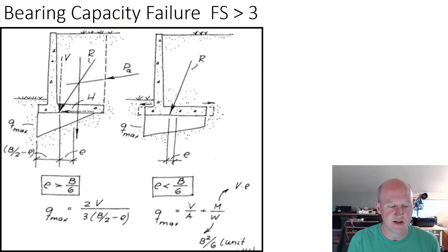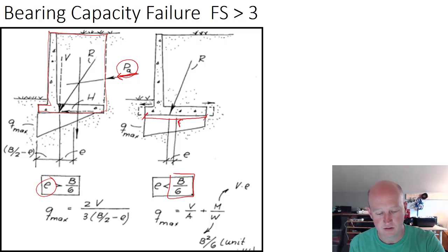When we're looking at the bearing capacity analysis, the primary concern is going to be the pressure and also the location of the resultant. If we had a really high driving force, it's going to tend to incline the resultant. The resultant force includes the weight of this entire retaining wall and the mass of soil that's sitting on top of the heel. We need to make sure that the eccentricity is less than B over six, which is the width of the base over six.